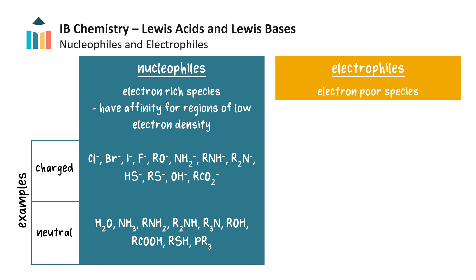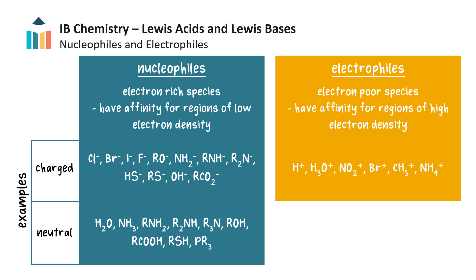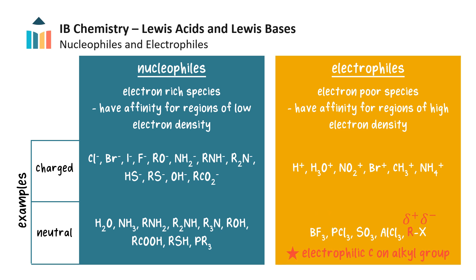Electrophiles are electron-poor or electron-deficient species. They are attracted to regions of high electron density and can accept a pair of electrons. They may be positively charged or neutral. When a molecule is neutral but one of its atoms has an incomplete octet, it acts as an electrophile or Lewis acid — for example, boron in boron trifluoride, phosphorus in phosphorus trichloride, and aluminium in aluminium trichloride all have vacant orbitals. In a haloalkane, the carbon atom bonded to the halogen is an electrophilic carbon because it is electron-deficient.